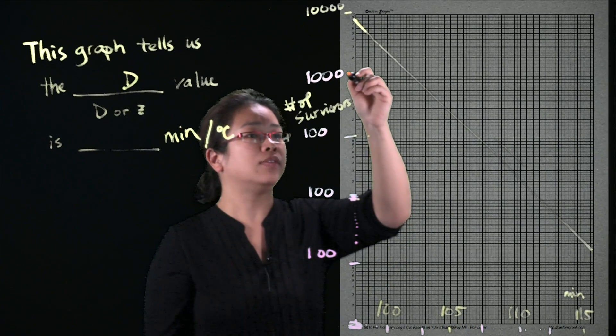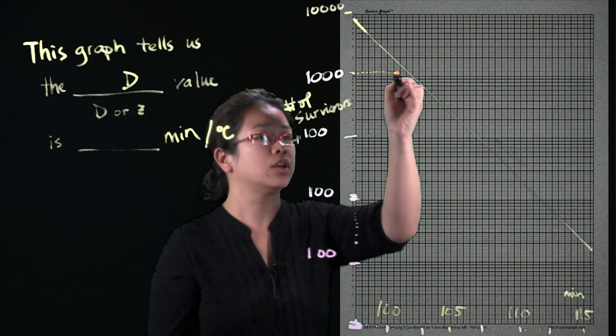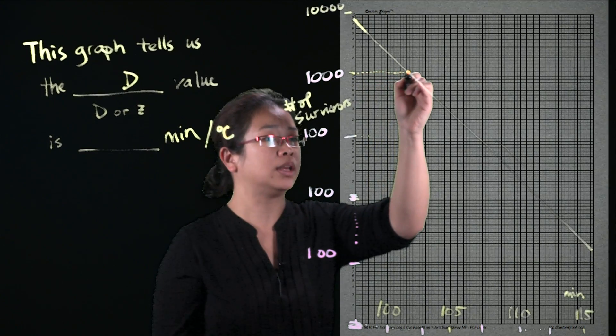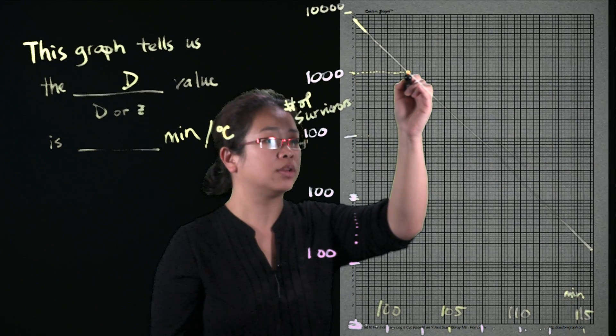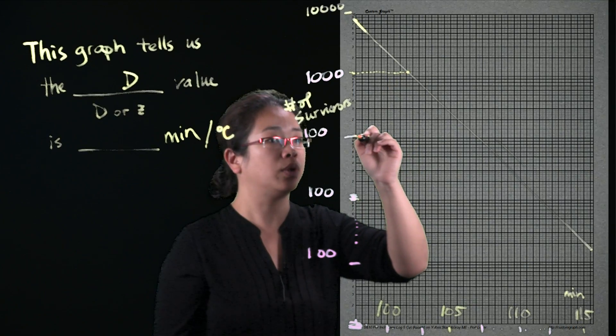Okay, and the D value to determine it again, just using visual inspection here. So I am going to see the difference, the time it takes to reduce the bacterial number from 1,000 to 100.